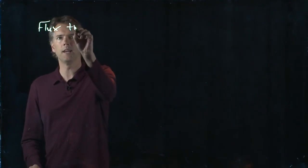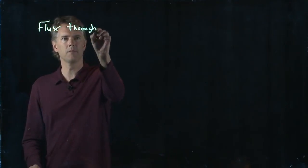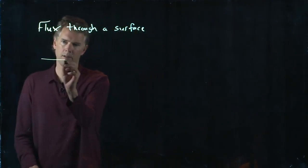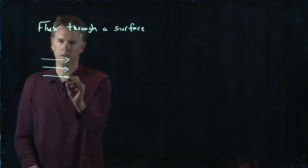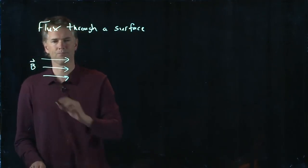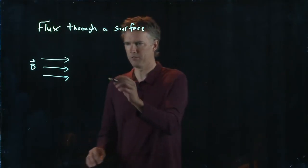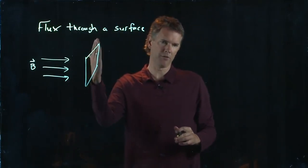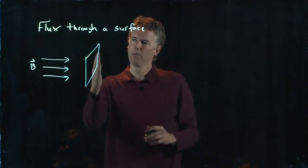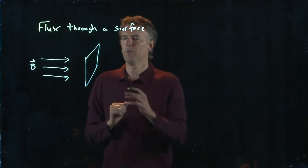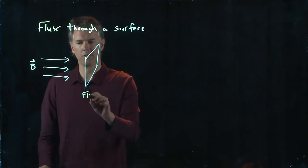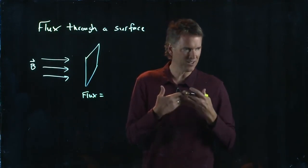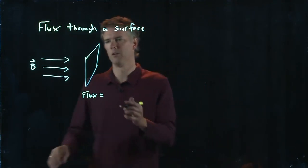Magnetic flux through a surface, and let's ask this question. Let's say I have lines of B that are pointing to the right, and now I have a surface like that. So it's a plane parallel surface that is perpendicular to those lines of B, and we want to ask, what is the flux through that surface? Remember, flux is lines of B through a surface.